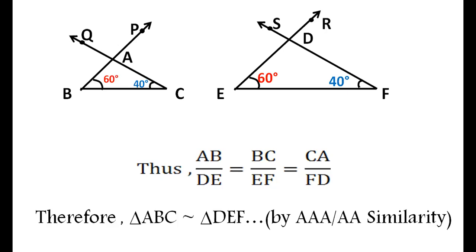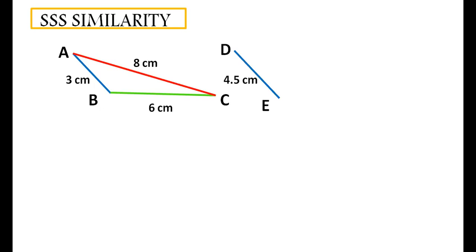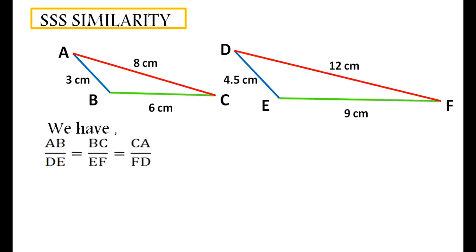The second similarity criterion is side-side-side similarity. For this, draw AB equal to 3 cm, BC equal to 6 cm, and AC equal to 8 cm to get triangle ABC. Again, draw DE equal to 4.5 cm, EF equal to 9 cm, and DF equal to 12 cm to get triangle DEF. We have the ratio of corresponding sides as AB by DE equal to BC by EF equal to CA by FD, which is equal to 2 by 3.